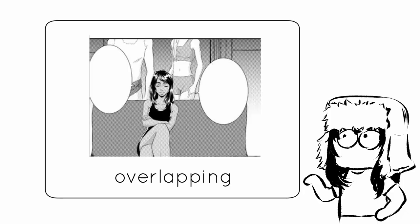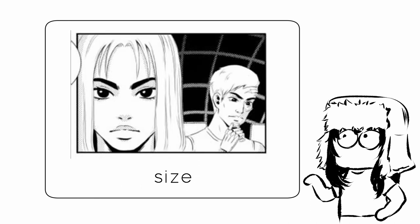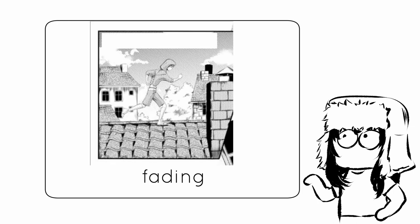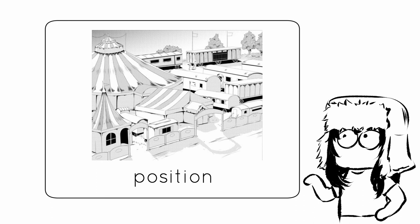Perspective is not the only way of showing a three-dimensional space. There are other things we already use automatically that show depth. For example, overlapping — we know the person partly covered by another is further back. You can also use different sizes: whoever is bigger in the picture is closer to the camera. An artistic device is fading: anything further in the background gets thinner lines and the closer something is the thicker the lines get. And the position of objects also conveys depth — we know one wagon is further away even without clear perspective, even if most lines are parallel.